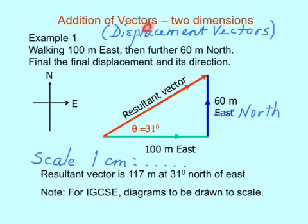Addition of vectors in two dimensions. The example we've got here is to do with displacement vectors. Now, a person is walking 100 meters east. He started from here and then up there. Then, he walks 60 meters north. And his final displacement is represented by this resultant vector.